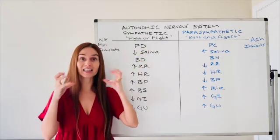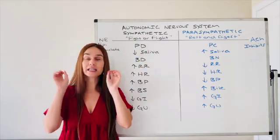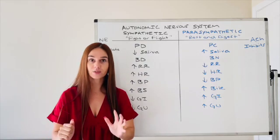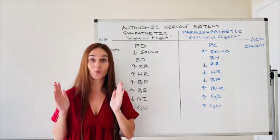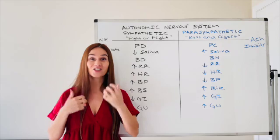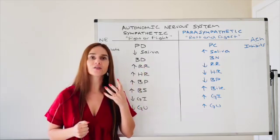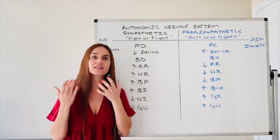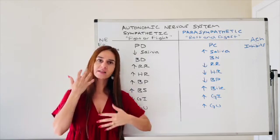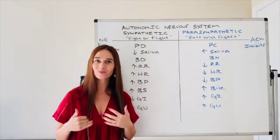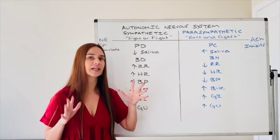My pupils are going to dilate. I'm in trouble. I need more light to see what I'm doing. So my pupils are going to go open. So more light comes in. So I can, for instance, run. My mouth is going to go dry. I don't need a lot of saliva. I don't need a lot of mucus. That is especially to help with your digestive process. So a decrease in saliva. I don't need that right now.